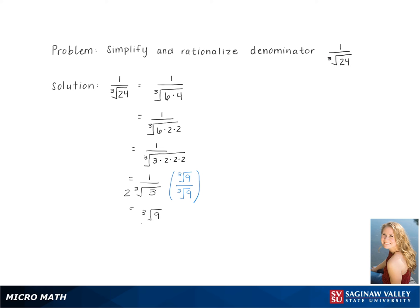Multiplying this through gives us the cube root of 9 on the top of the fraction and 2 times the cube root of 27 on the bottom.